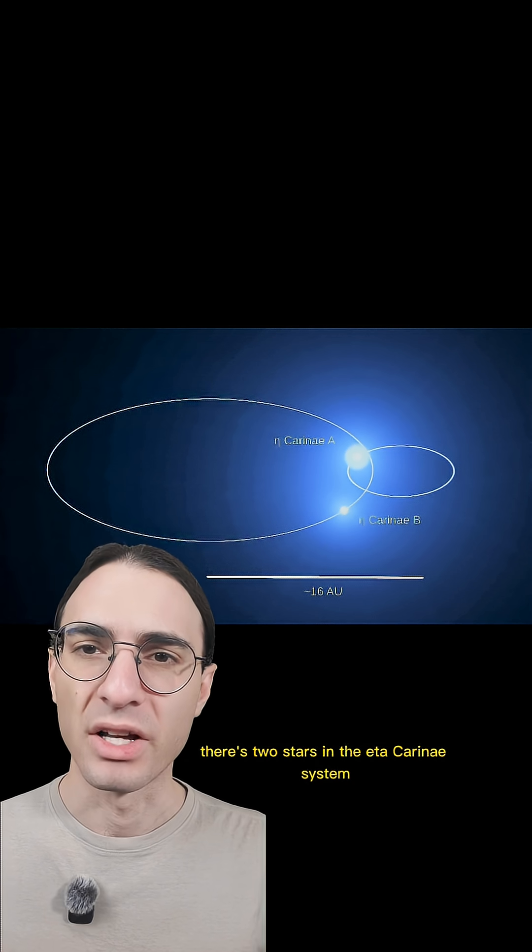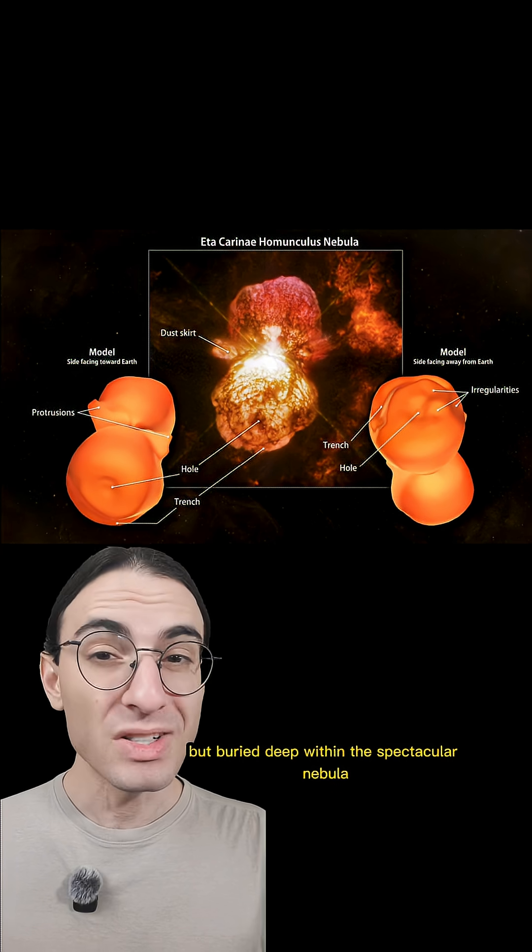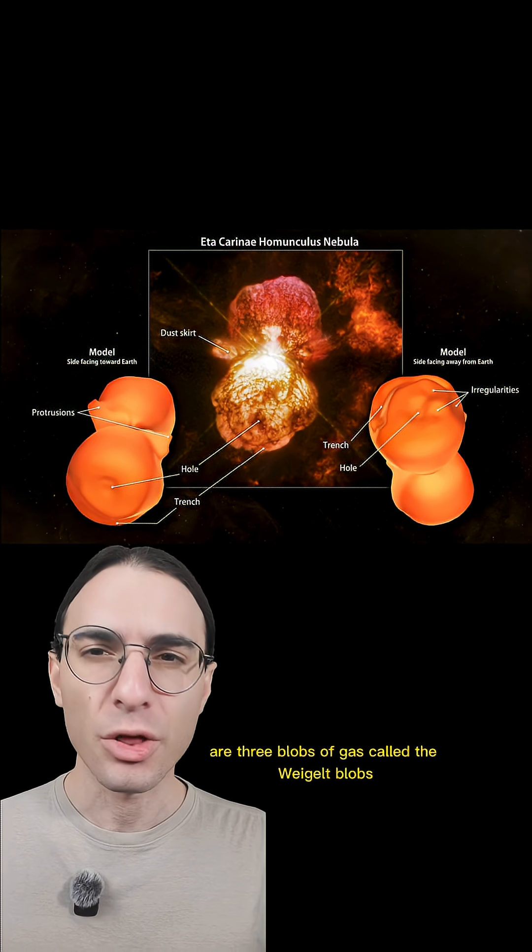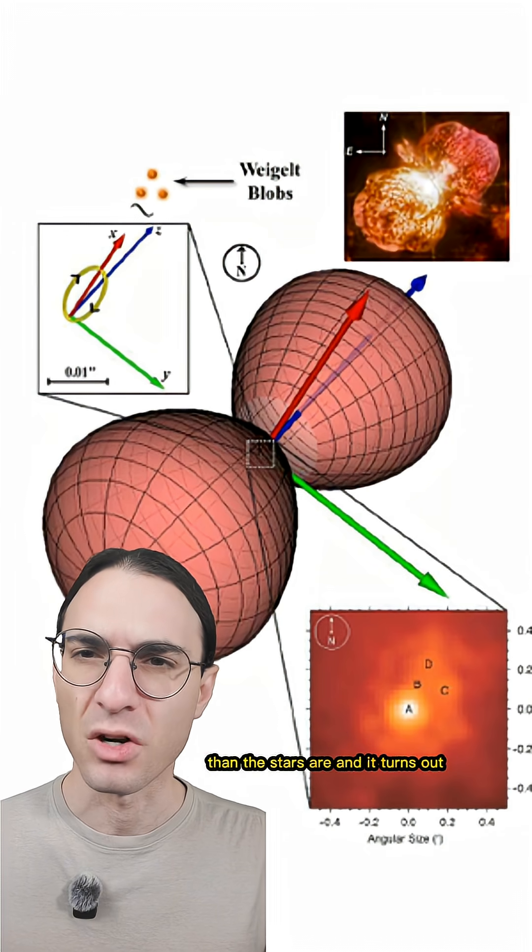There's two stars in the Eta Carinae system, and they're surrounded by the relatively new homunculus nebula. But buried deep within the spectacular nebula, near the pair of stars, are three blobs of gas called the weigelt blobs, just a bit further out from the center than the stars are.